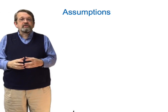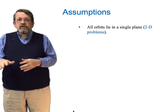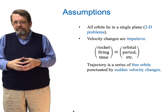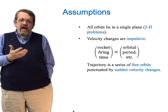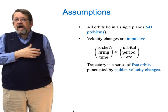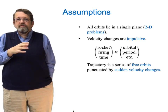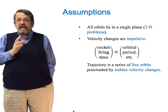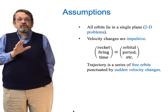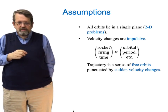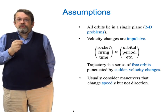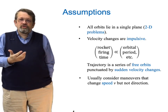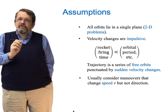In our analysis of orbital maneuvers, we'll make some simplifying assumptions. First, we'll consider all orbits lying in a single plane — a two-dimensional problem. Second, we'll assume all velocity changes happen suddenly; the rocket firing time is very short compared to orbital periods. This is an excellent approximation for chemical rockets, but not for ion propulsion. We'll also restrict our attention to changes in speed only — not direction — so rocket motors fire along the trajectory to speed up or slow down.